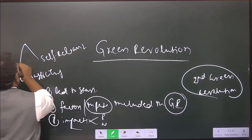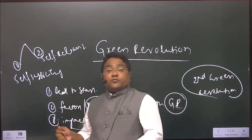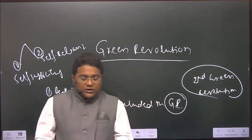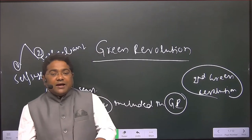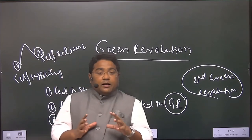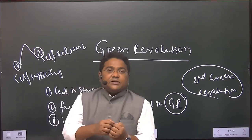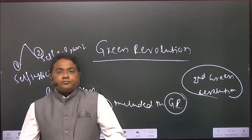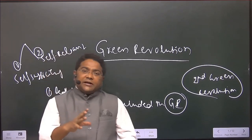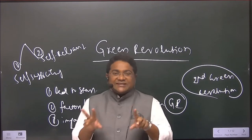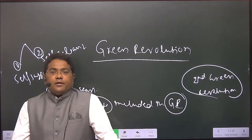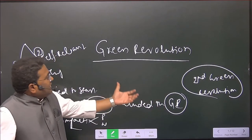You must understand self-sufficient and self-reliant carefully. This topic is useful not only in Geography Paper 1 but also in Paper 3 GS Economy in the agriculture topic. We will also see how this topic integrates with current affairs, especially Sustainable Development Goals, any conventions or protocols related to the green revolution, and the difference between a convention and a protocol.